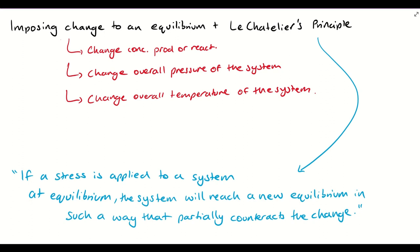Le Chatelier's principle says that if a stress — a stress being one of these three changes — is applied to a system that is at equilibrium, the system will reach a new equilibrium in such a way that partially counteracts the change. If we apply a stress to a system that's at equilibrium, the system will no longer be at equilibrium; it'll search for a new equilibrium that partially counteracts the stress. This will make a lot more sense with a few examples.